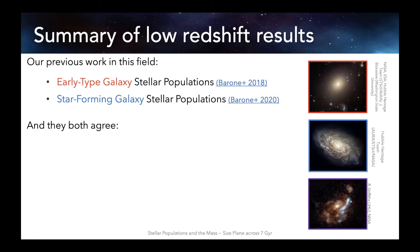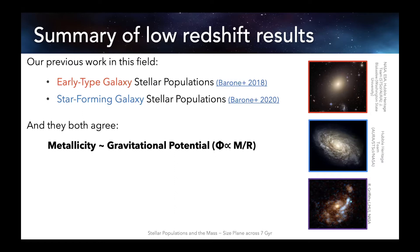The work I'll be mainly focusing on today builds on previous work at low redshift. We looked at early-type and star-forming galaxies and how they vary in the mass-size plane. Quite remarkably, despite different samples, different methods and templates used, we found two key results. Firstly, that global stellar metallicity correlates best with the gravitational potential. Secondly, that age correlates best with the surface mass density — meaning least intrinsic scatter and least residual trend with size compared to other combinations of mass and size.